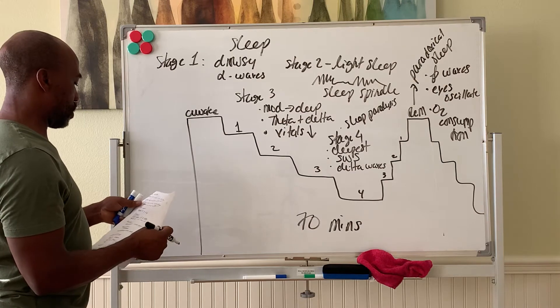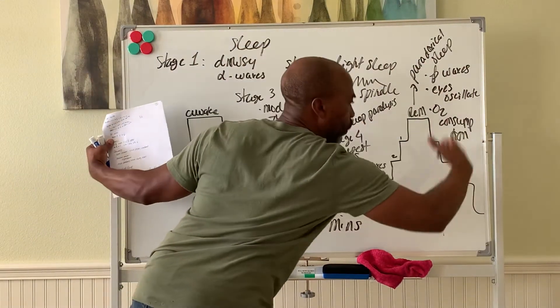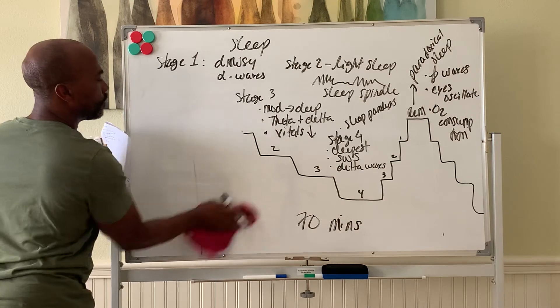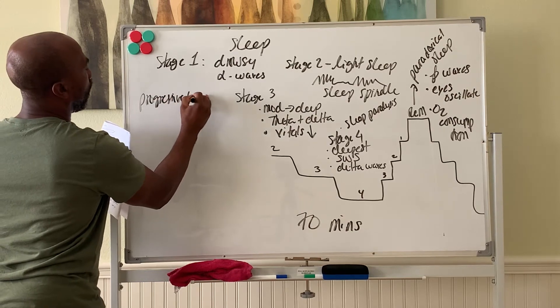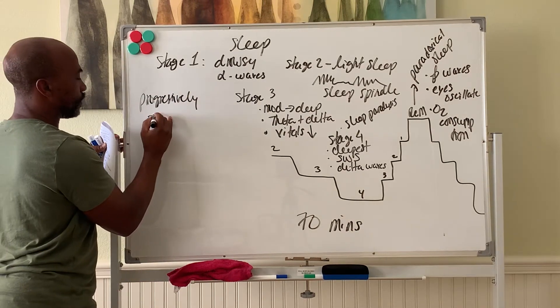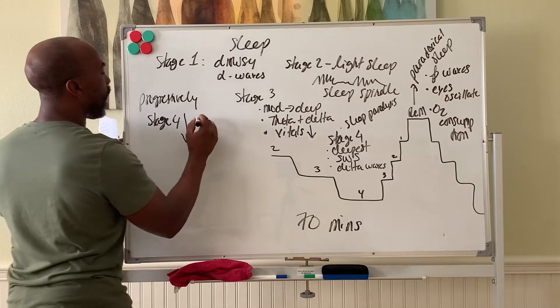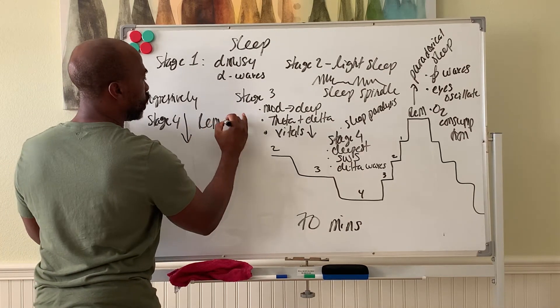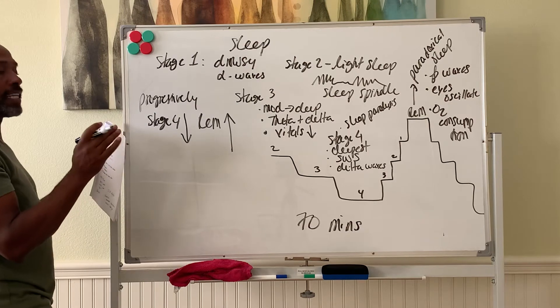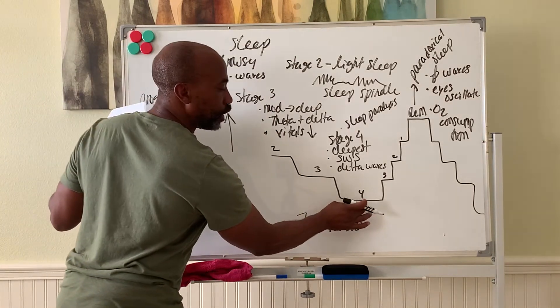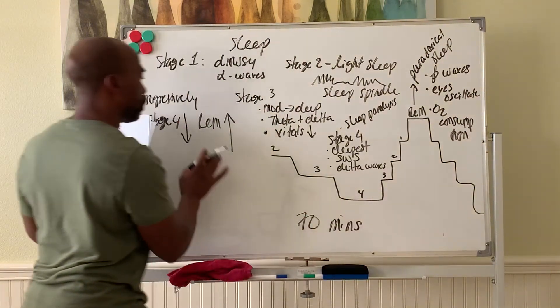Now as you cycle through the night, so one cycle, another one, another one, another one, as you cycle through the night, progressively your stage four sleep per cycle drops, while your REM sleep increases. You spend more time in REM as you go through the night and less time in stage four. In fact, you're probably only in stage four sleep maybe the first two cycles. Afterwards, the deepest you go is stage three and back up, then stage three and back up.